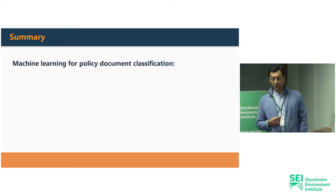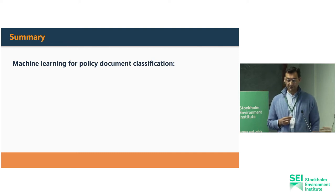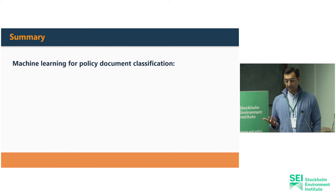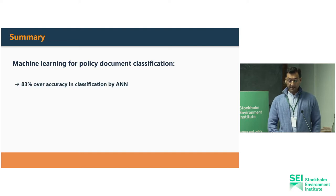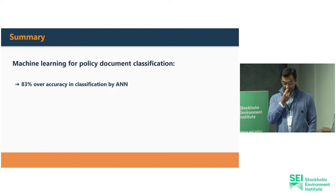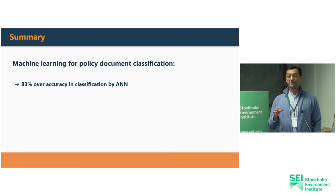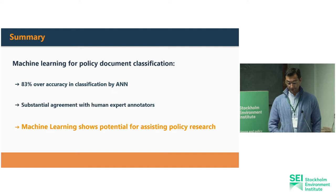In this project we explored the use of machine learning methods for the study of fossil fuel supply-side policies. We argued that machine learning can be exploited to assist in identifying, tracking and monitoring supply-side policies, and our results confirmed this. More specifically, 83% accuracy is quite a remarkable result, given that the policy texts we used share some significant overlap with each other.